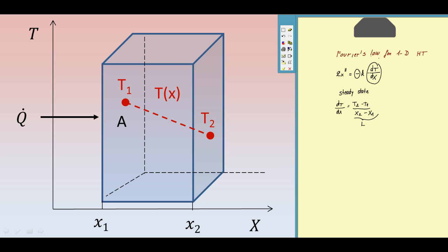And the heat flux is then minus k T2 minus T1 over L.